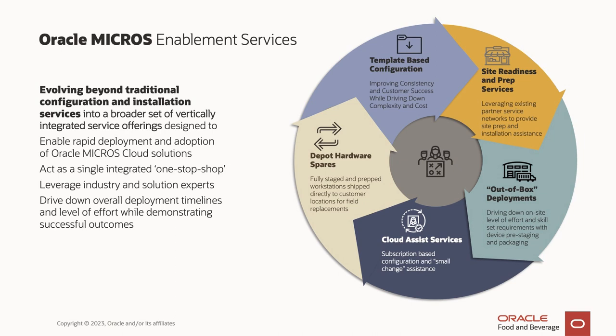My name is Wayne Harding and I lead our Global Enterprise Program team for the Food and Beverage Consulting Group. Over the past 12 months, we've been working on key initiatives to enhance our consulting offerings. Today I'm going to talk about one of these: out-of-the-box pre-staging and deployment optimization. Traditionally, our enablement services have required on-site resources to configure and install Symfony at customer locations — a deployment method that's not only costly, but also slower to deploy to a vast estate. To address this, we've created a broader set of vertically integrated service offerings — a single integrated one-stop shop reducing reliance on third-party services, enabling rapid deployment and adoption, leveraging industry expertise, and improving consistency.